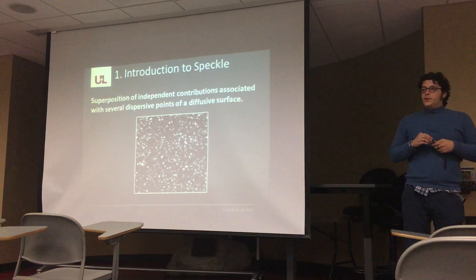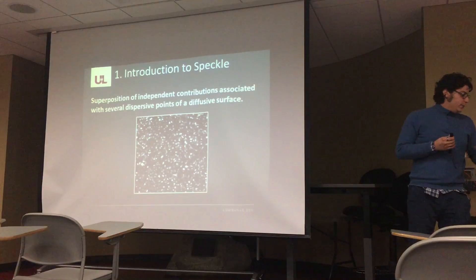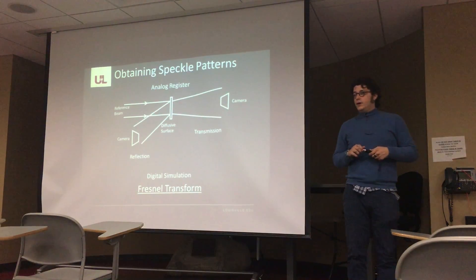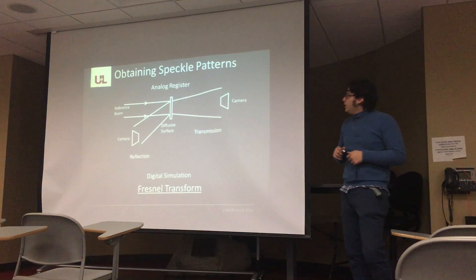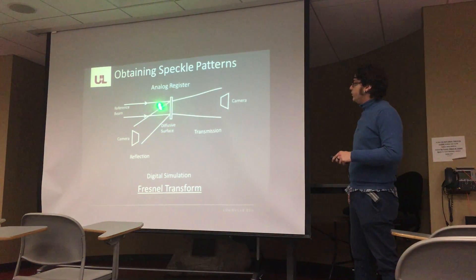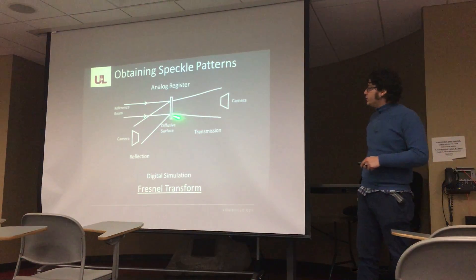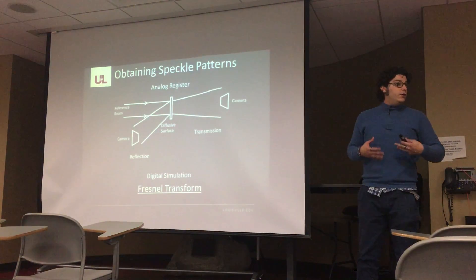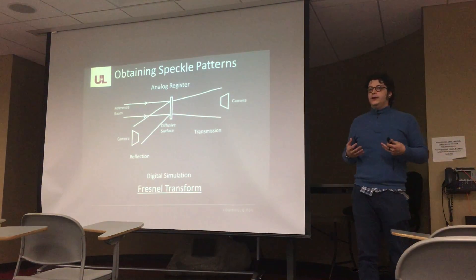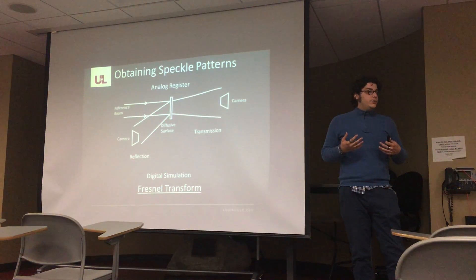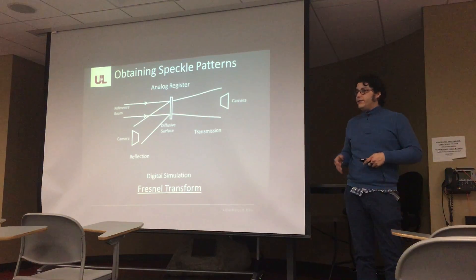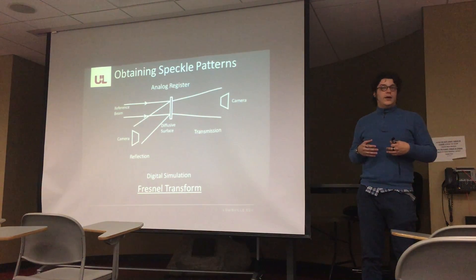In the speckle you can have a complex field — that means you can have a phase and an intensity and a function of this kind of field. You can record a speckle with a camera by two means: one is a reference beam of coherent laser light that can transmit over a diffusive surface, or by reflection. In reality we can't actually record complex fields — we only record intensities — and try to sort out, with mathematical modeling, a complex field, or just assign a pseudo-complex field by means of transformation.